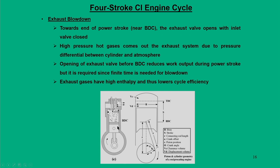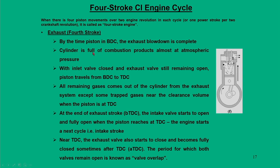The expansion stroke happens exactly as in the SI engine cycle — the piston moves from TDC to BDC. The power stroke continues till combustion ends, and this is the only power output in the four-stroke cycle. Similarly, when combustion is complete, the exhaust valve opens, exhaust blowdown starts, and the piston reverses from BDC to TDC, pushing all unwanted exhaust products out. The concept of valve overlap also applies here. There are four strokes with one power stroke for two crankshaft revolutions — this is the four-stroke CI engine cycle.